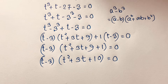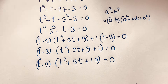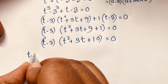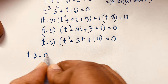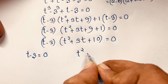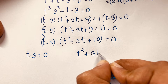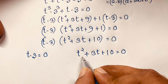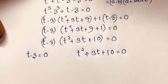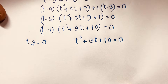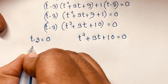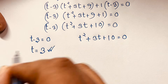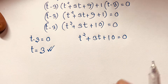Now we find two cases. Our first case is t minus 3 equals 0, and the other case is t squared plus 3t plus 10 equals 0. So we have a nice quadratic equation. From the first case, t minus 3 equals 0, so t is equal to 3. This is our final answer.